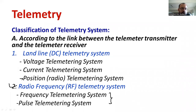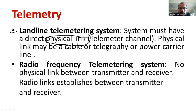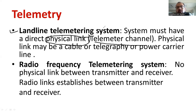Let me provide a brief discussion on the landline telemetry system, also called the DC telemetry system. It should have one physical link — it may be a copper cable or aluminum cable — between the transmitter and receiver. This physical link is also known as the telemetry channel. You can use a cable or a power carrier line. The sub-classifications include voltage telemetry, current telemetry, and position telemetry.